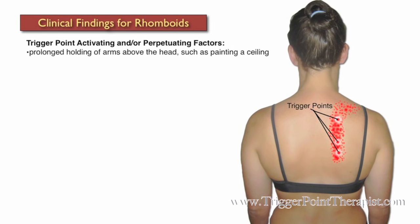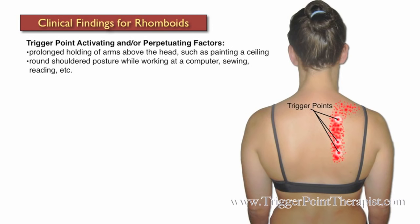Some factors that may activate and perpetuate rhomboid trigger points include prolonged holding of the arms above the head, such as when painting a ceiling, and rounded shoulder posture while working at a computer, sewing, or reading.